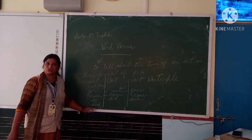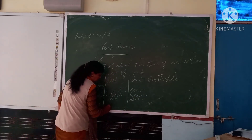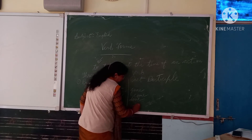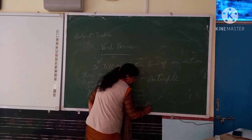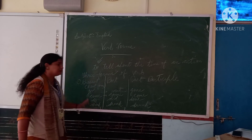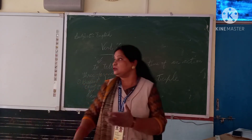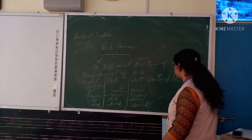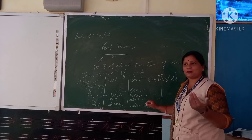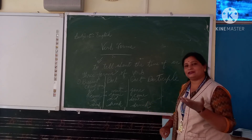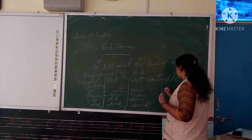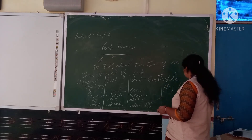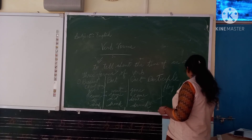Next, 'drink' — the first form is 'drink,' the second form is 'drank,' and the third is 'drunk.' These are only some of the verb forms; there is a long list. Some verbs form their past and past participle by simply adding -ed — for example, 'play,' 'played,' 'played.'